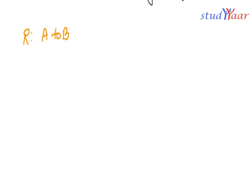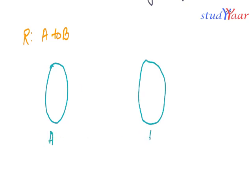Let us understand a few concepts about relations that would help us realize the concept of functions better. Suppose I have a relation from A to B. Here is my set A and over here I have my set B. I have a few elements in my set A and a few elements in my set B as well. A relation of the type where each element of A is related to exactly one element in B —